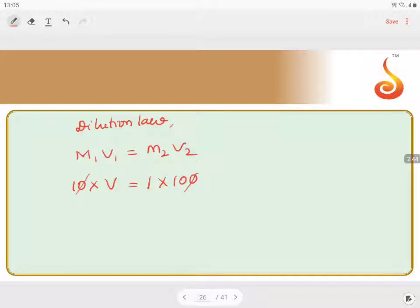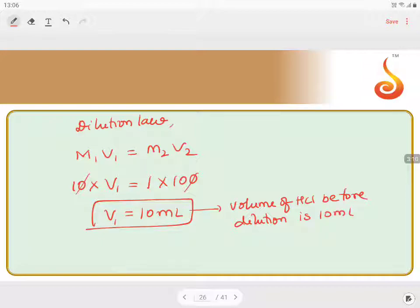From this, V equals 10 mL. That means the volume of HCl before dilution is 10 mL and after dilution is 100 mL.